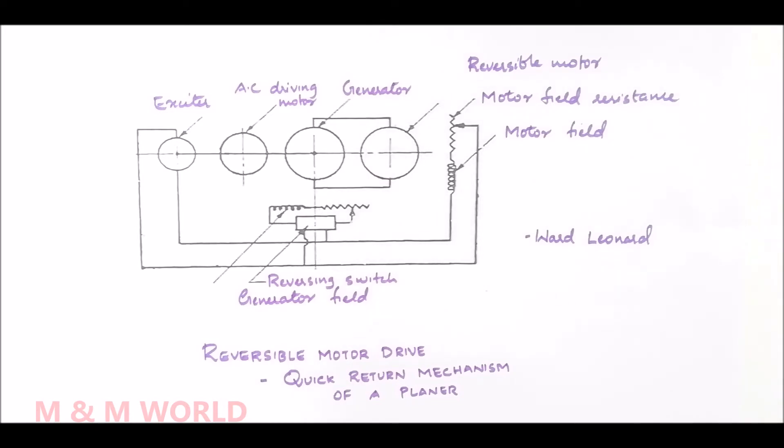All modern planers are equipped with variable speed electric motor which drives the bull gear through a train of gears. The most efficient method of electrical drive is based on Vard Leonard system which comprises four electrical machines.